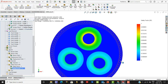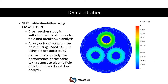We saw how we used EMWorks 2D to study the electric field distribution inside the cable and inspect whether there was any breakdown occurring in the insulator.